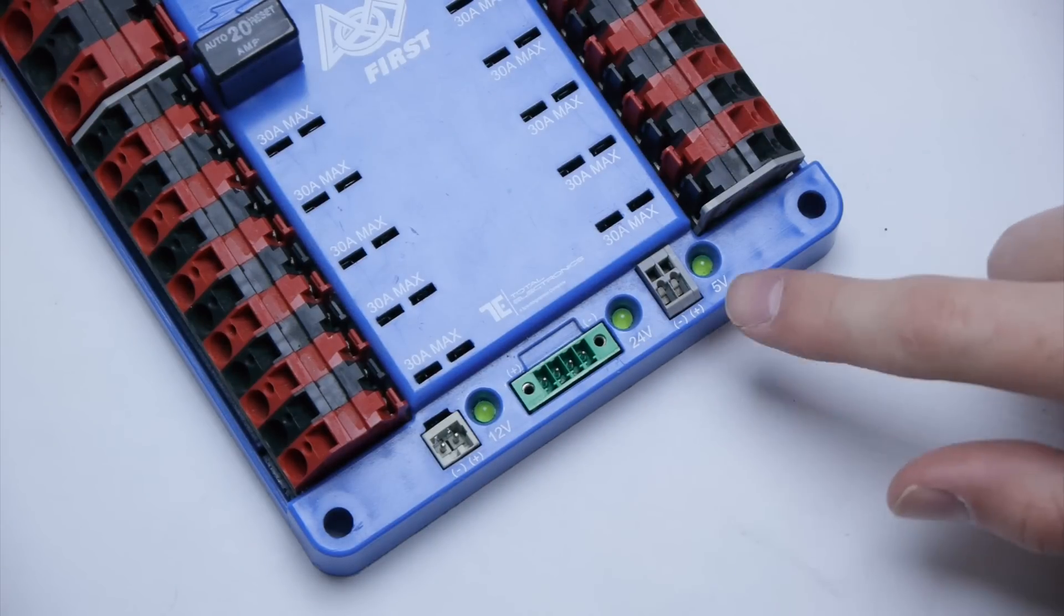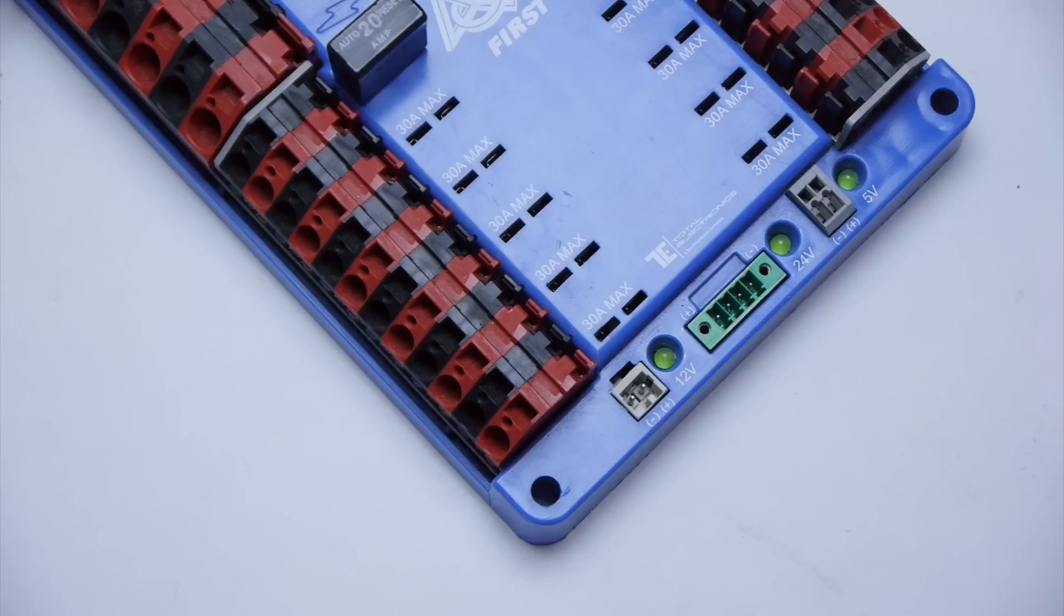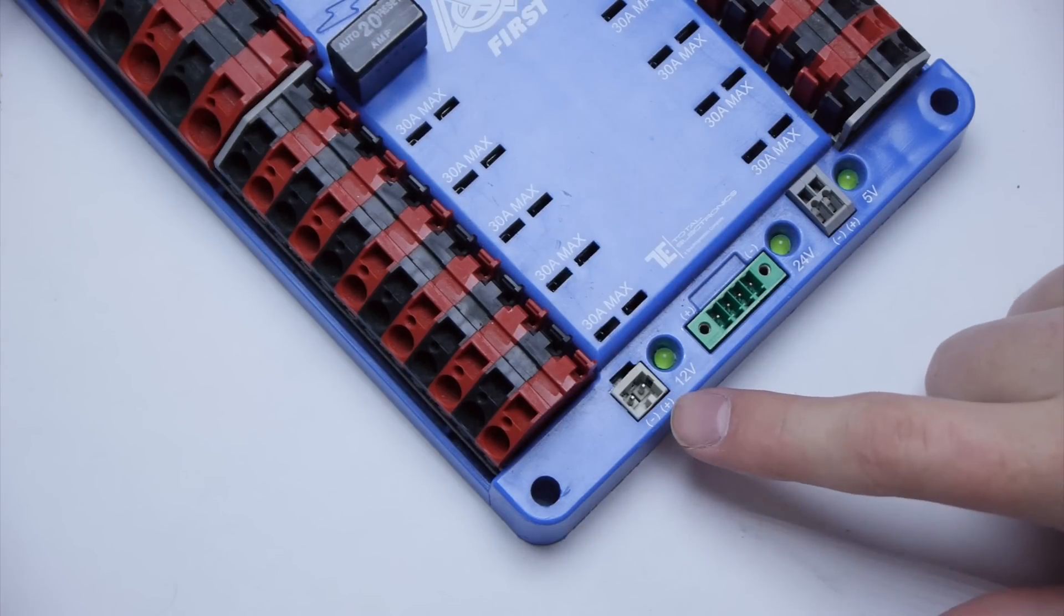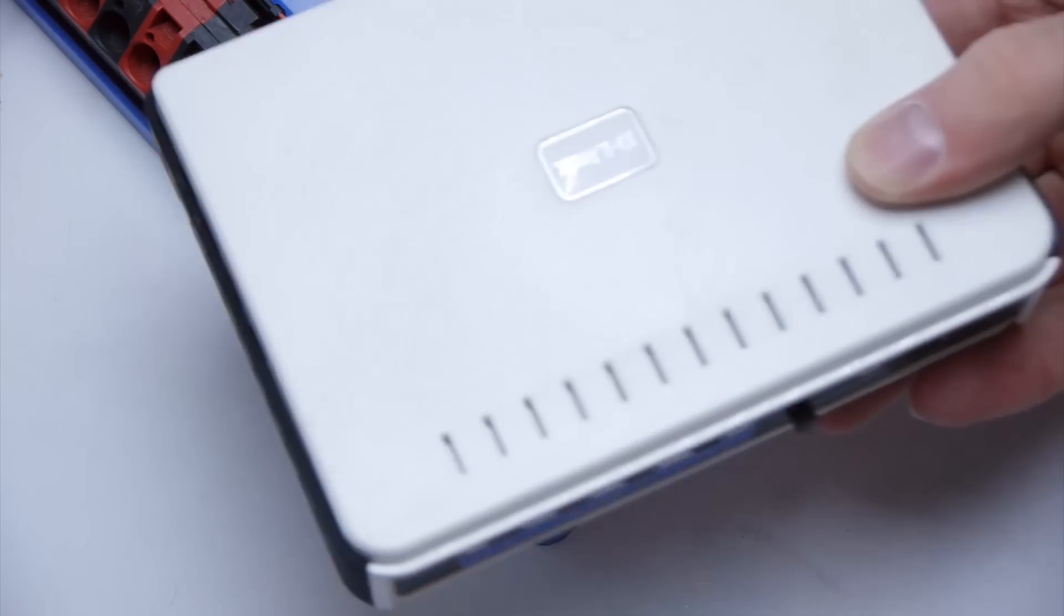These LEDs indicate whether each part of the power distribution board is working. The next connector we have here is a 12-volt WAGO-OUT. This is used to power your radio.